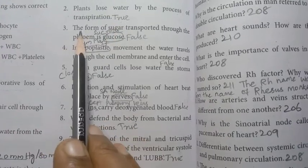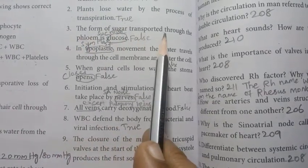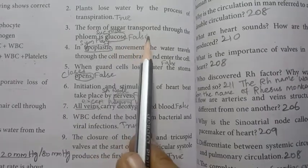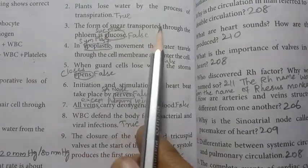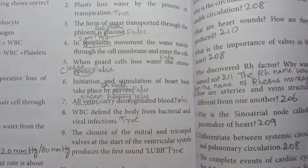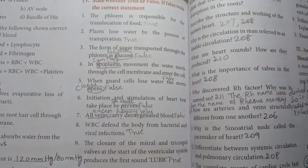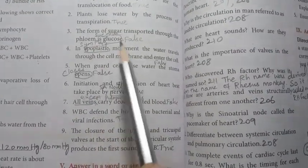Number three: the form of sugar transported through the phloem is glucose. The statement is false. The form of sugar transported through phloem is not glucose, that is sucrose. Correct statement is sucrose.